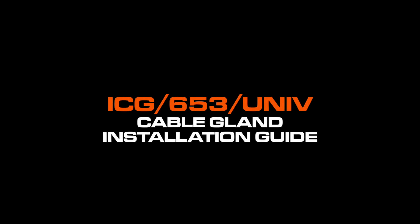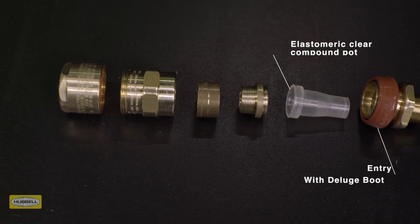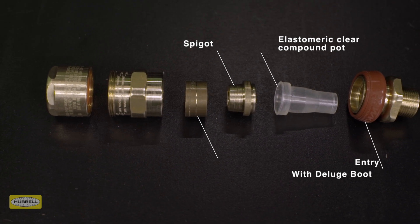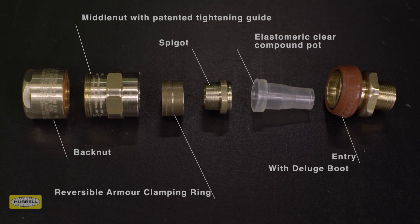The ICG653 universal cable gland consists of six key components: entry with deluge boot, elastomeric clear compound pot, spigot, reversible armor clamping ring, middle nuts with patented tightening guide, and back nut.